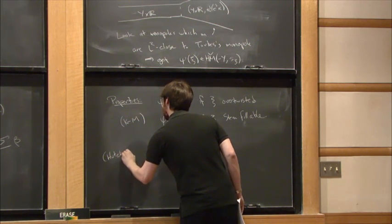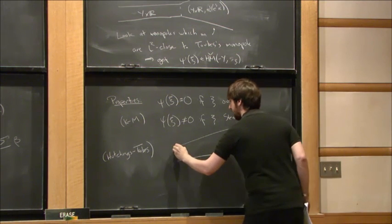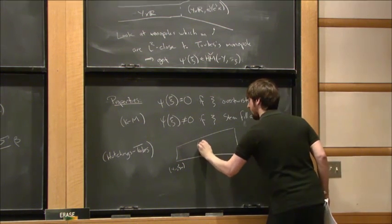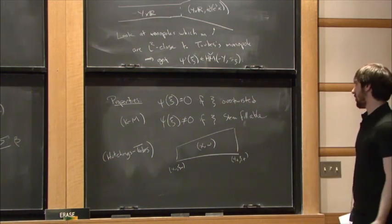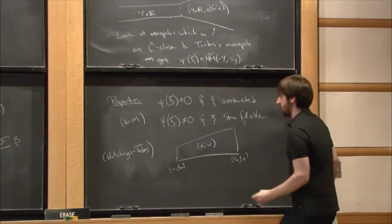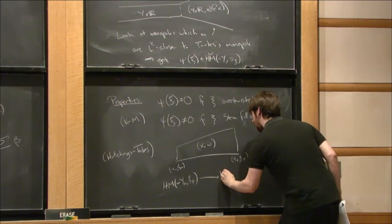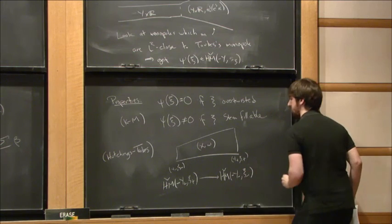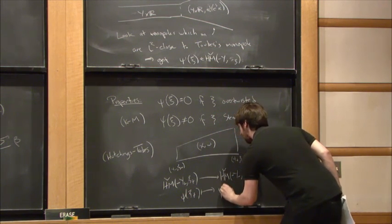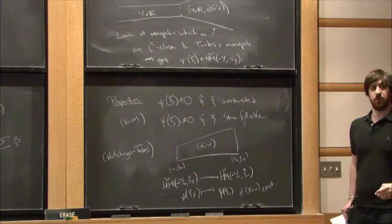There's also a recent result due to Hutchings and Taubes about behavior under exact symplectic cobordism. Given a symplectic cobordism (X, omega) with concave end (Y-minus, C-minus) and convex end (Y-plus, C-plus), monopole Floer homology is roughly a TQFT: cobordisms induce maps from HM of minus-Y-plus to HM of minus-Y-minus. For exact cobordisms, this map sends the contact class to the contact class — the contact class behaves naturally.